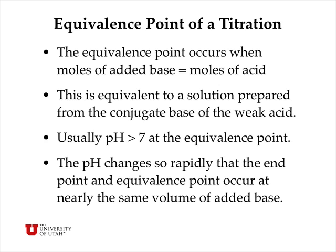The equivalence point of a titration occurs when the number of moles of added base equals the number of moles of acid in the original solution. At this point the solution is equivalent to one prepared from the conjugate base of the weak acid — in our benzoic acid example, equivalent to a solution prepared from sodium benzoate. The pH is typically greater than 7 at the equivalence point when titrating a weak acid with a strong base. If you do it the other way around, titrating a weak base with a strong acid, the pH will be less than 7. The pH changes so rapidly near the equivalence point that the endpoint and equivalence point occur at essentially the same volume of added base, so indicators serve as an approximate way of determining the equivalence point.